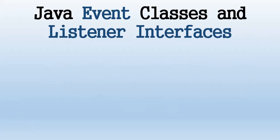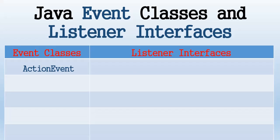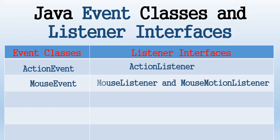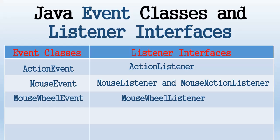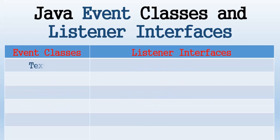The following are examples of Java Abstract Window Toolkit event classes and their corresponding event listener interfaces. For ActionEvent we have ActionListener. For MouseEvent we have MouseListener and MouseMotionListener. For MouseWheelEvent we have MouseWheelListener. For KeyEvent we have KeyListener. For ItemEvent we have ItemListener. For TextEvent we have TextListener.